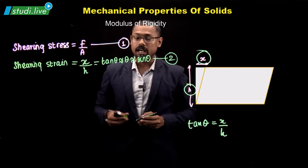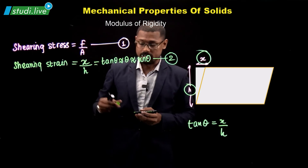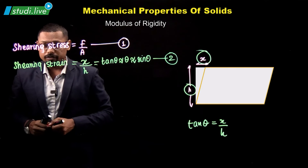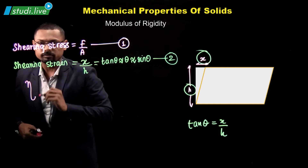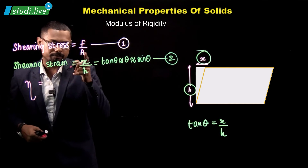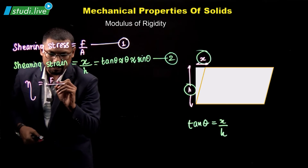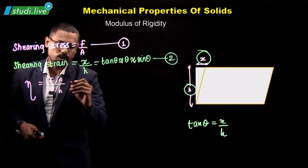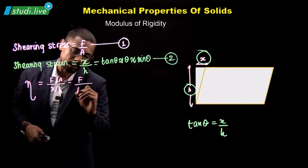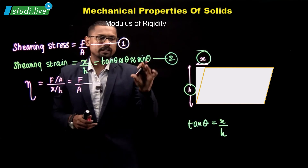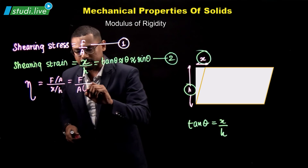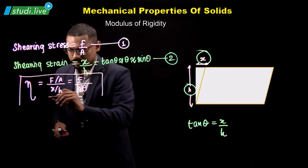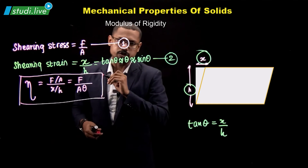Now I want to calculate modulus of rigidity. Modulus of rigidity is expressed as eta (η) and is the ratio of shearing stress to shearing strain: η = (F/A) / (x/h), which can also be expressed as F upon A divided by theta. This is the modulus of rigidity.